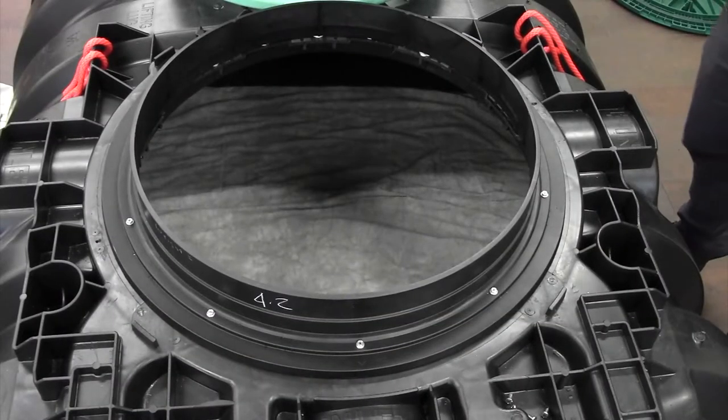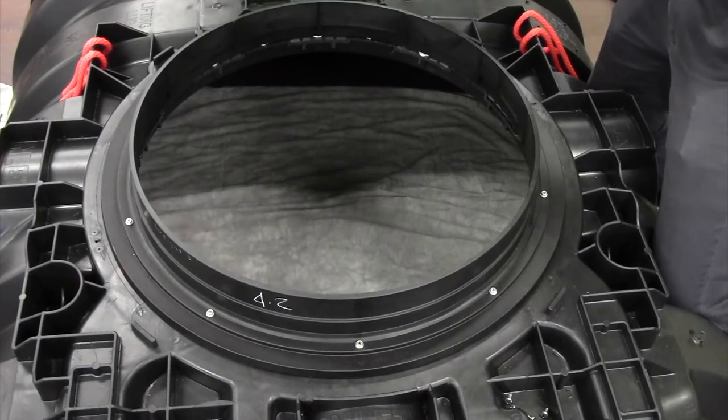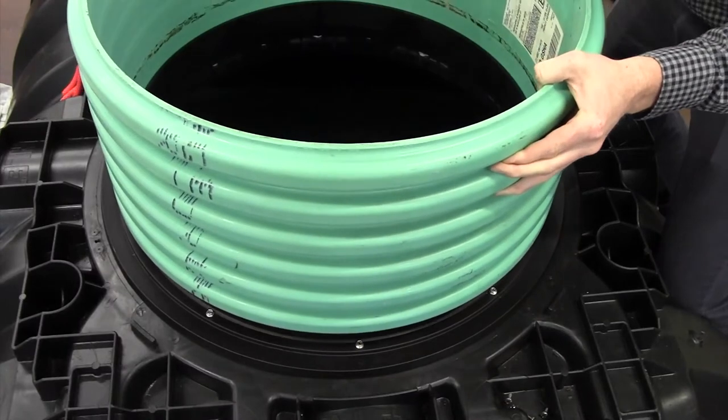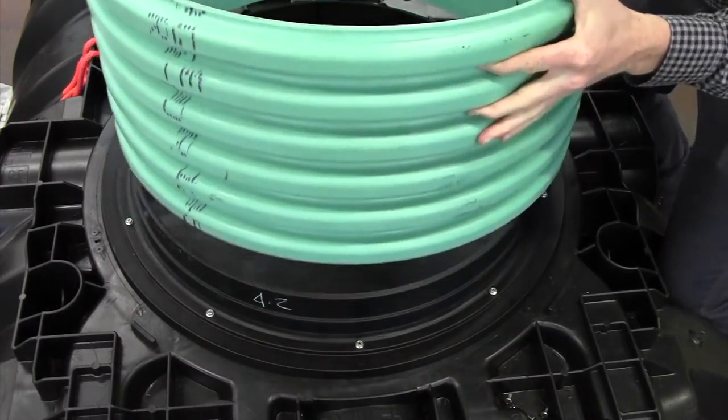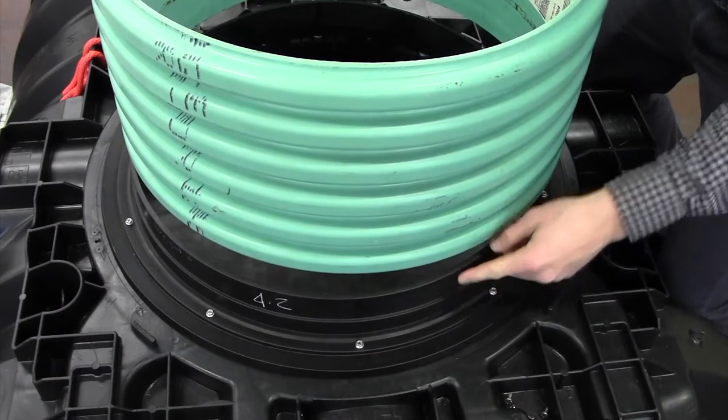When connecting the ultra-rib or IPEX pipe, the first step is to check for fit. Take your pipe and make sure it fits onto the pipe adapter ring. It should sit flush with the tapered connection here in the middle.